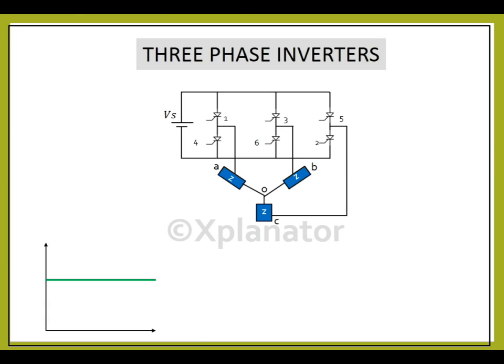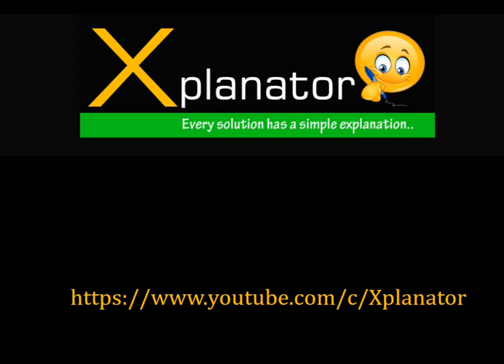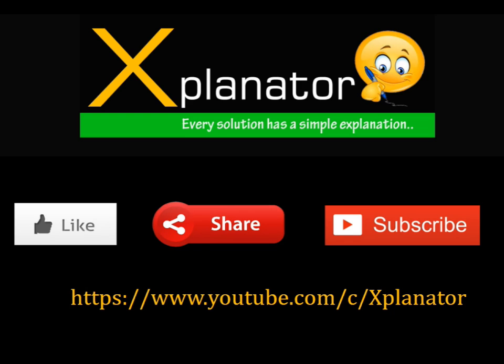So, with 6 thyristor switches and a star connected load, a 3 phase AC supply can be obtained from a DC supply. Thank you for watching. If this video was helpful, then hit the like button. Share the same and do subscribe to explanator to never miss an update. Do check out the other videos in the library and drop in your suggestions in the comments section below.